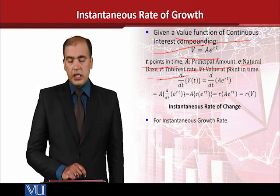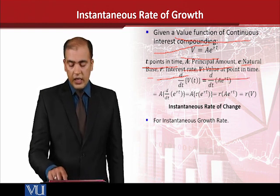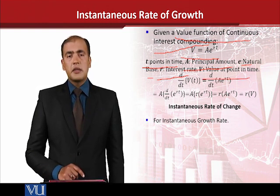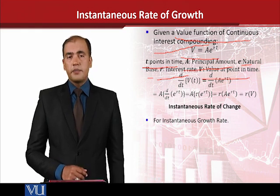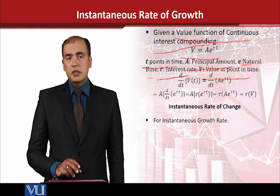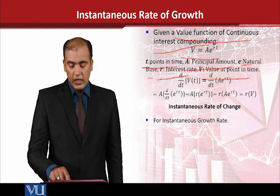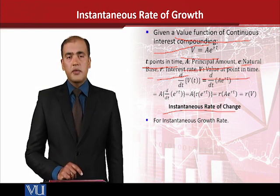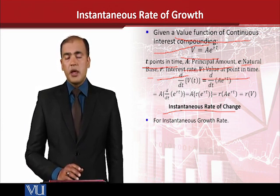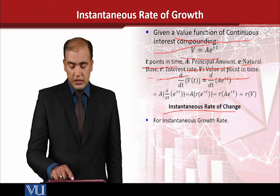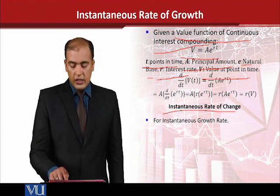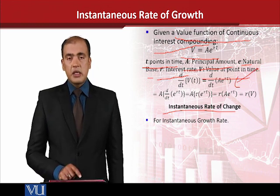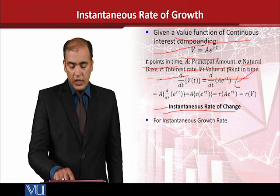r is the interest rate and v is the value at point t in time. This is how this function is developed. Now, to find out the instantaneous rate of change, we simply take the derivative with respect to time. This is the original function of which we have taken the first derivative with respect to time, and after that we have solved it.